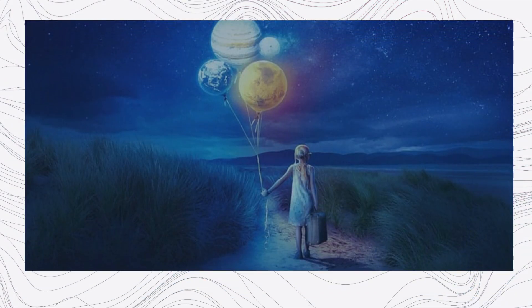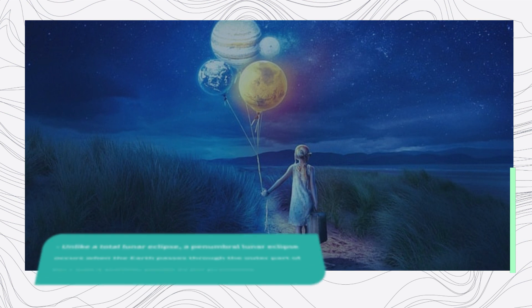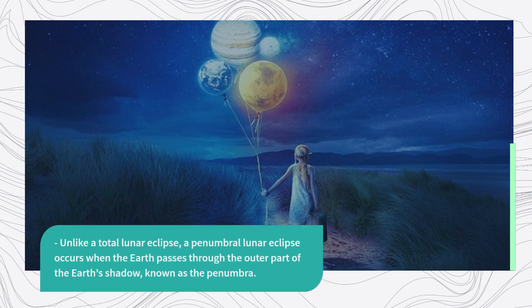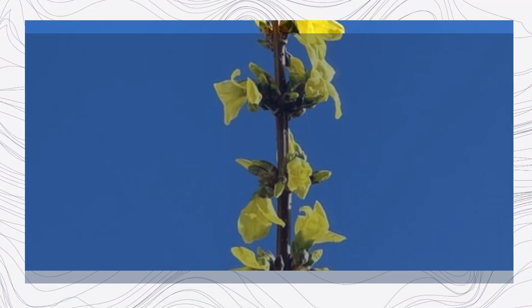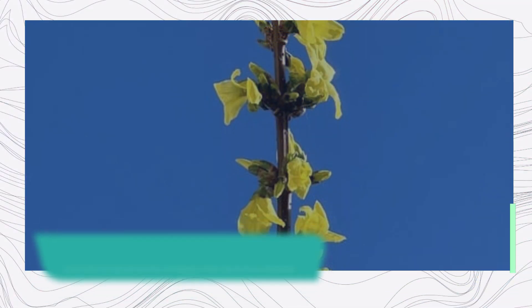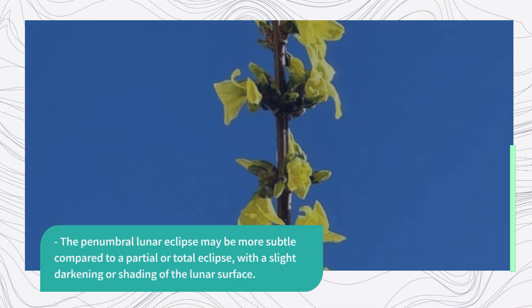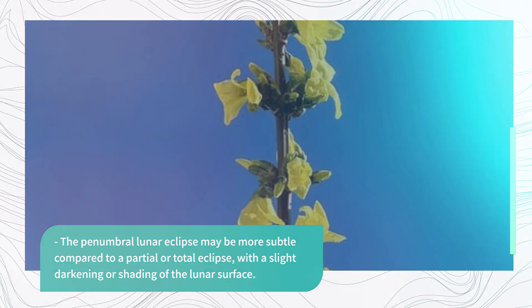Unlike a total lunar eclipse, a penumbral lunar eclipse occurs when the Earth passes through the outer part of the Earth's shadow, known as the penumbra. The penumbral lunar eclipse may be more subtle compared to a partial or total eclipse, with a slight darkening or shading of the lunar surface.